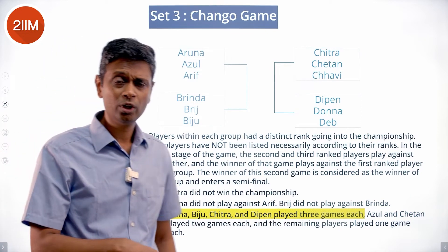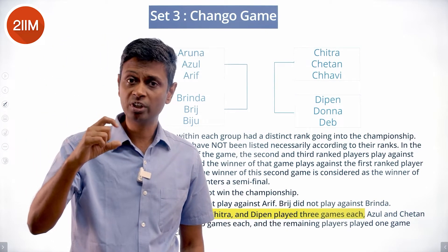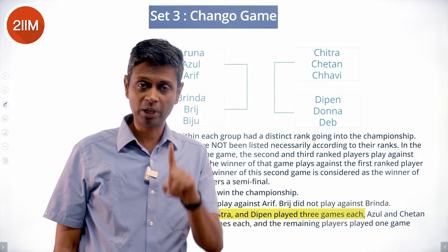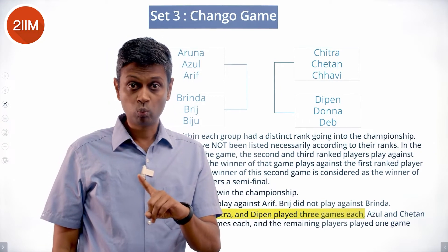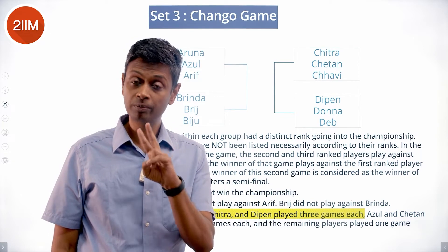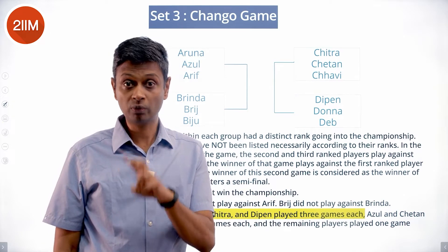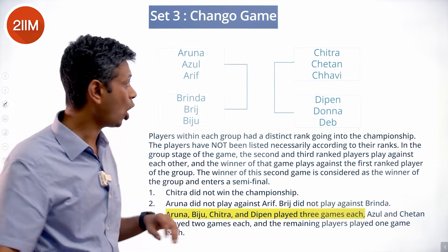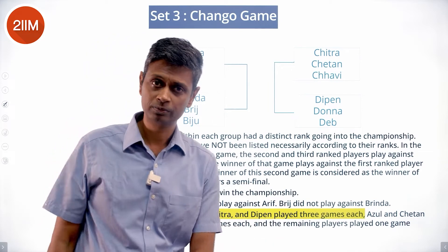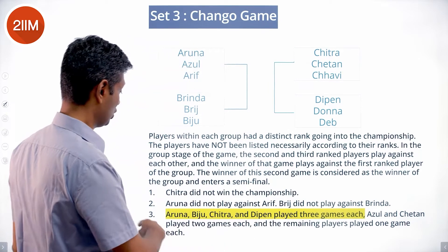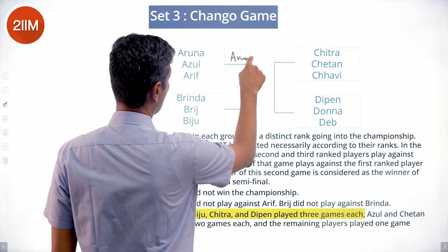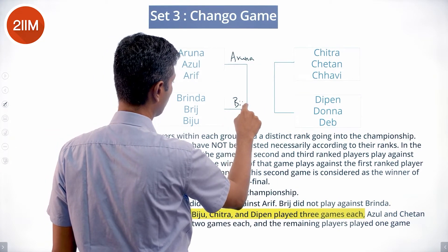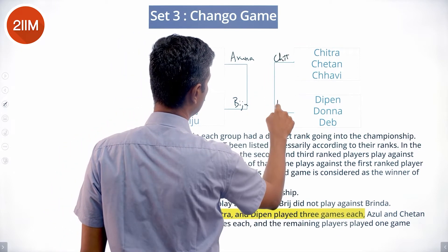Within a group, the top-ranked player plays one game, the player who wins the first round plays two games, and the loser of the first round plays one game. So if you played three games, you went outside your group — meaning Aruna, Biju, Chitra, and Dipen automatically qualified for the semi-finals.